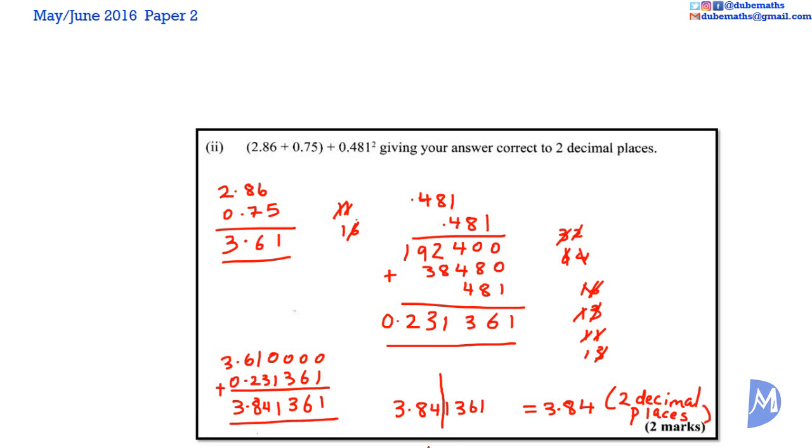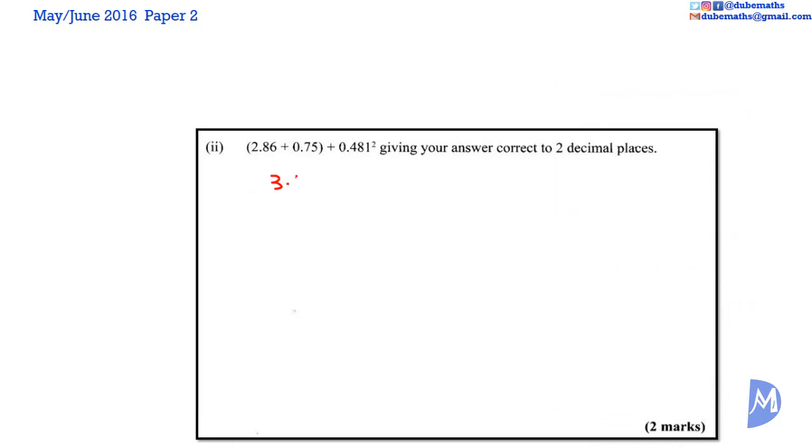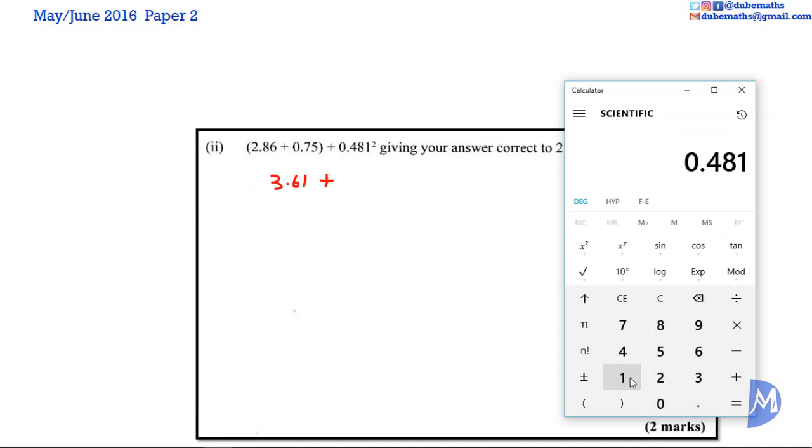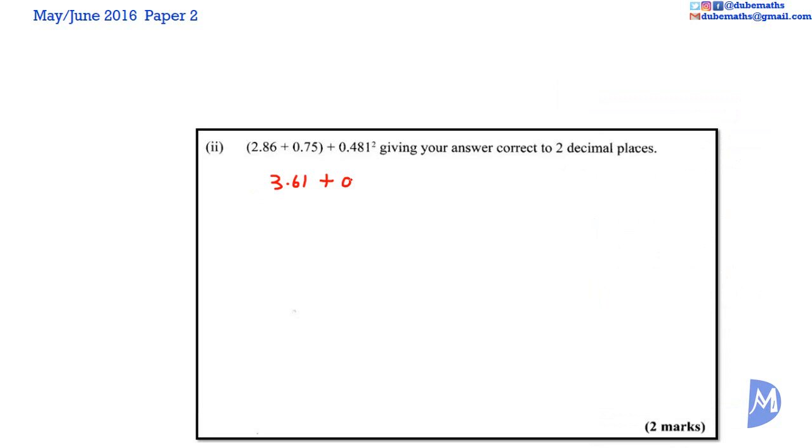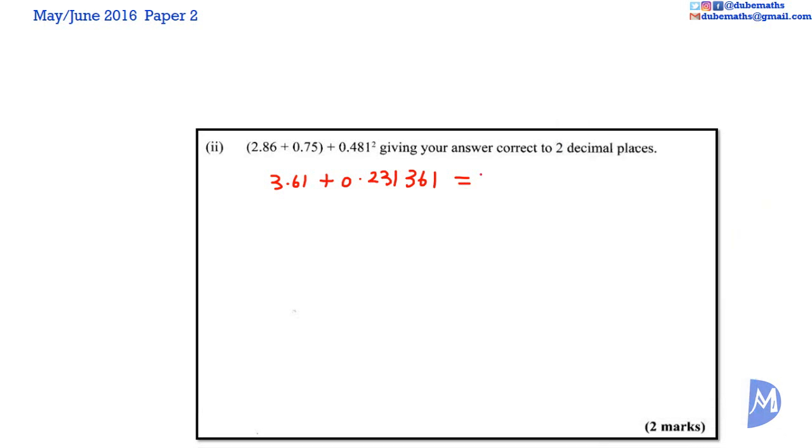And of course, feel free to do this on your calculator. 2.86 added to 0.75 is equal to 3.61. 0.481 squared, 0.481 squared, 0.231361, which is equal to 0.231361 added to 3.61 is equal to 3.841361.